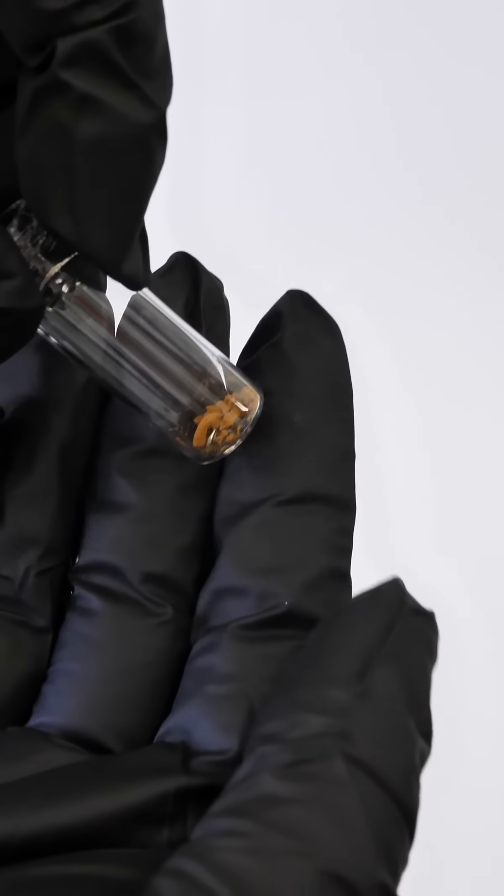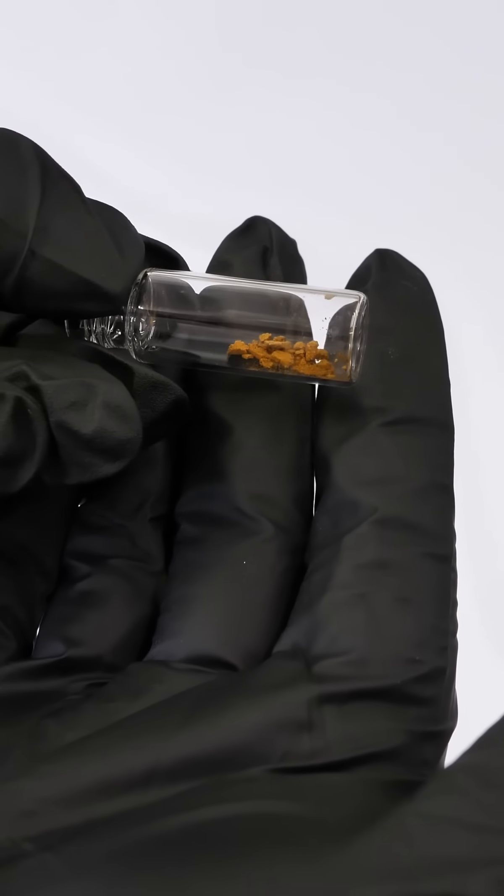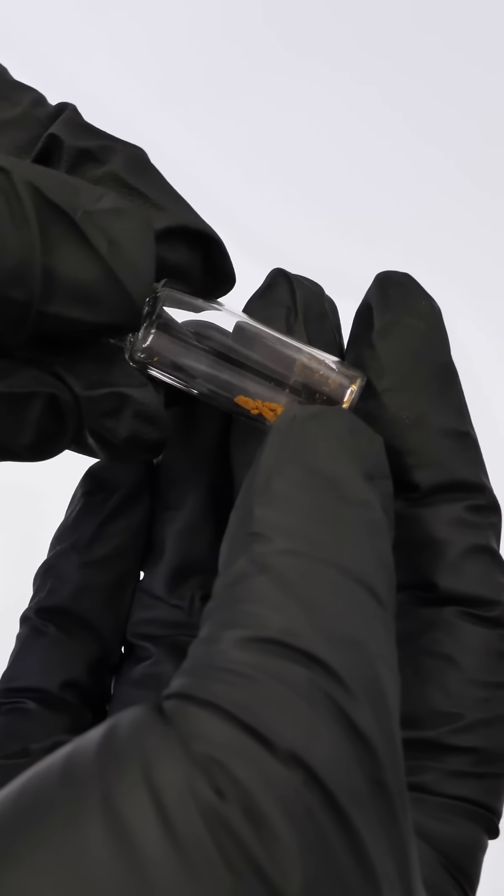This is what powdered gold looks like: brown and typical for metal powders, not shiny. The shine would return if I melted it down into a solid gold nugget.